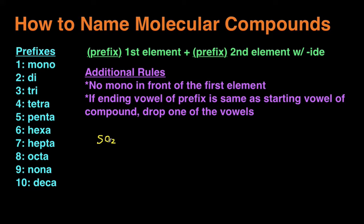Naming molecular compounds is actually really easy. You start off with the first element and put a prefix in front. The prefixes tell you how many of that element there are. For chemistry, you really just need to know the prefixes for numbers one through ten. You start with a prefix, then name the first element, then add the prefix for the second element with '-ide' at the end.